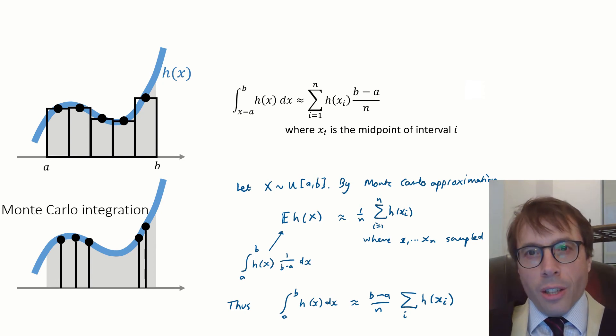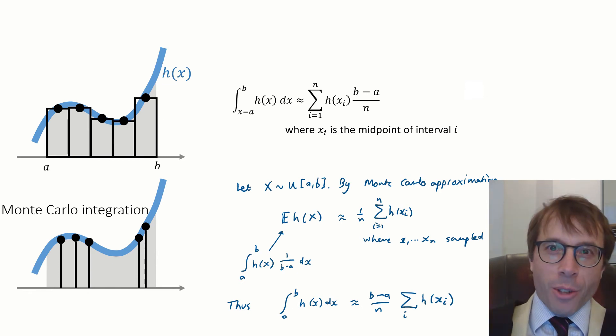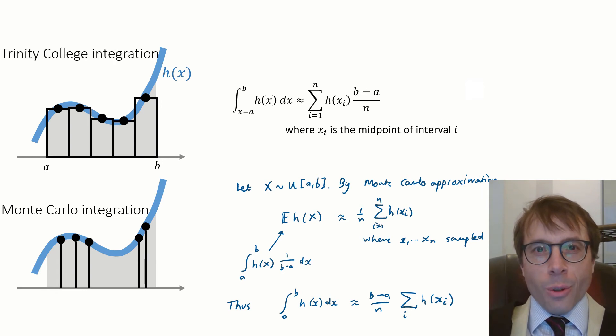The name Monte Carlo is a bit dumb. It's just hey, this method's random, do you know what else is random? Gambling. Do you know where they have lots of gambling? In Monte Carlo. So I think we should rename the standard type of integration. Let's call it Trinity College integration in honour of Isaac Newton.